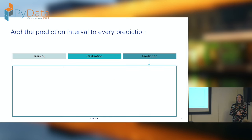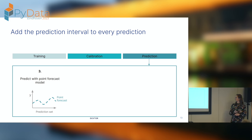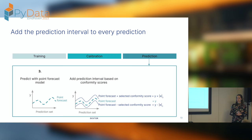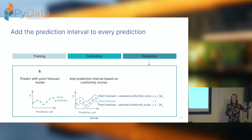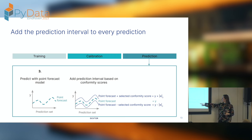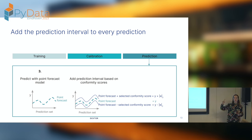Then the last step: prediction. We predict with our point forecast model — not different from anything you've already done. Then we add the prediction interval on top of it. The width of the prediction interval was found in the calibration step; it's a fixed width that you simply add or subtract around the forecast. As you can see in the graph, it's constant over the test set. If I'm forecasting for one day, it will be constant over that full day.